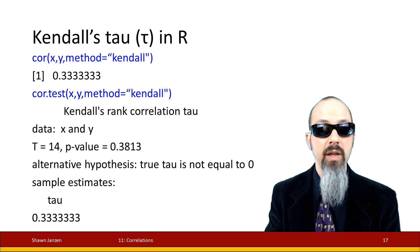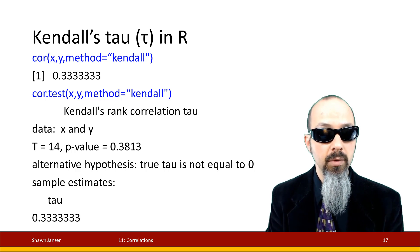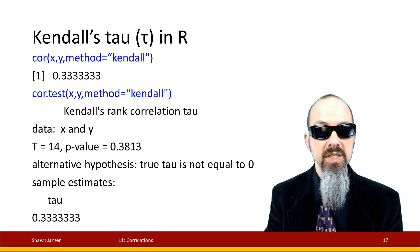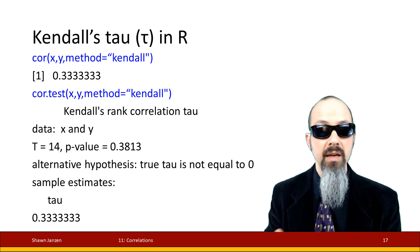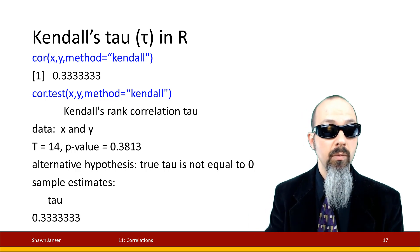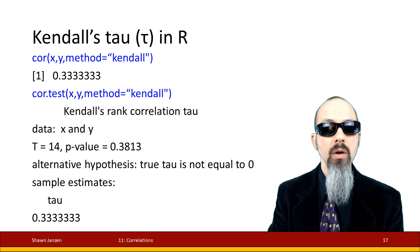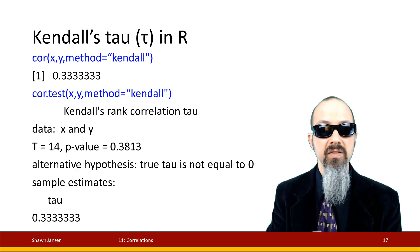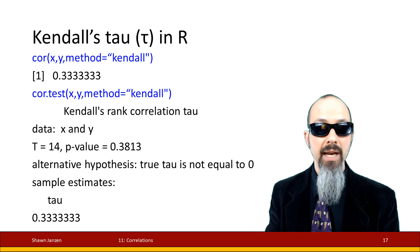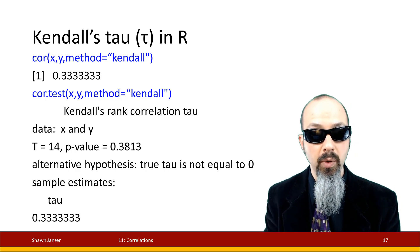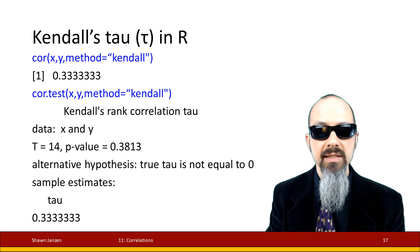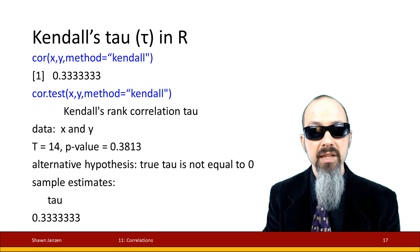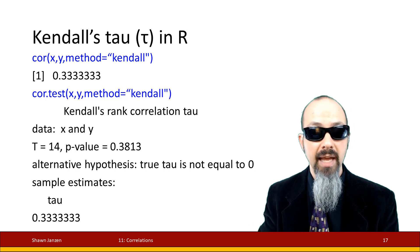When I want to replicate Kendall's Tau in R, I use the cor() function like before, but specify method equals 'kendall' — not 'Kendall's', just 'kendall'. When I do that, I get 0.3333 repeating, which matches our calculations by hand. When I do cor.test() specifying method equals 'kendall', at the bottom it shows tau equal to 0.3 repeating and a p-value of 0.38. Don't worry about the T statistic — just pay attention to the p-value and the tau.